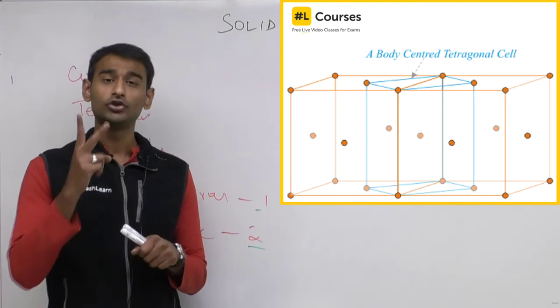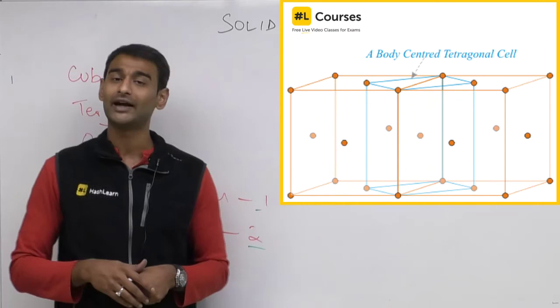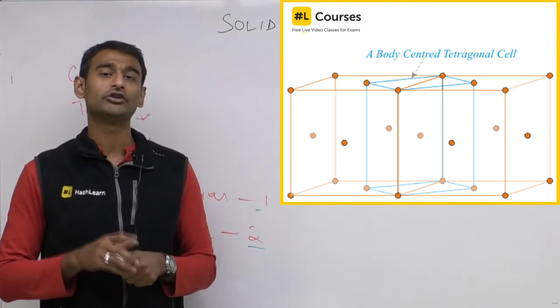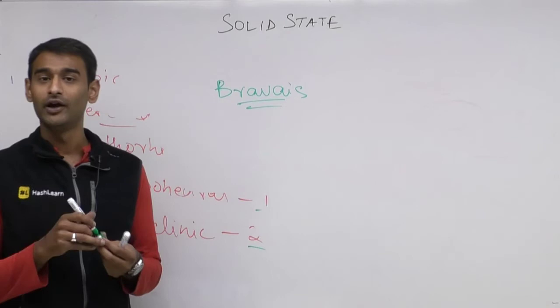That was the type of mistake Mr. Frankenheim made — he counted 15 lattices of which two were similar. Mr. Bravais corrected this and told us that only 14 lattices are distinct. Because of this, Mr. Bravais is credited with the discovery of the 14 lattices, and nowadays we know all of these as Bravais lattices.